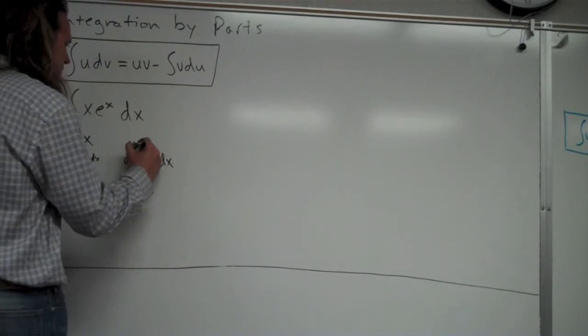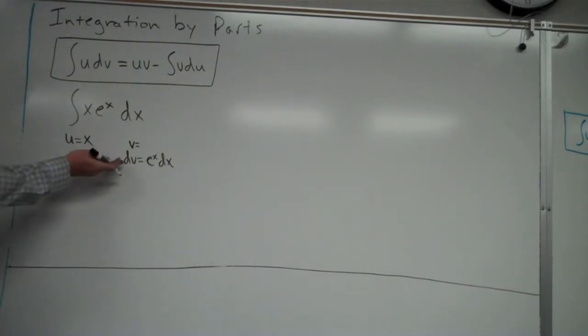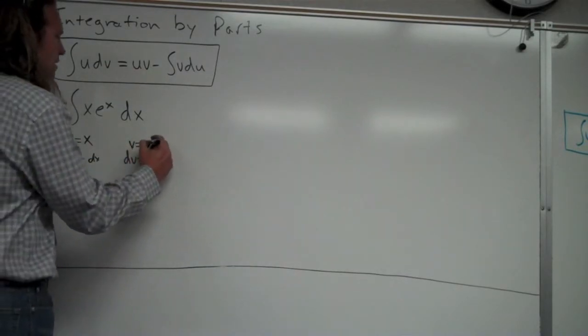Over here with v. To get v, you do the anti-derivative. Because you have dv as like the derivative, so to get back to v, you've got to do the anti-derivative. So that's going to be e to the x.